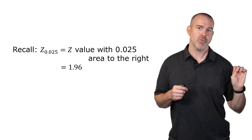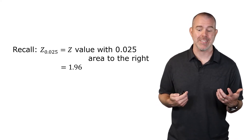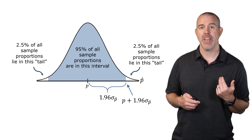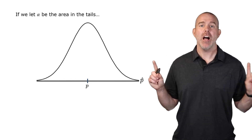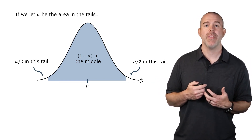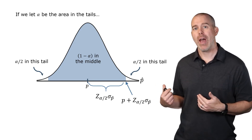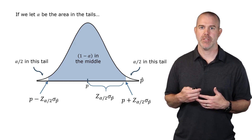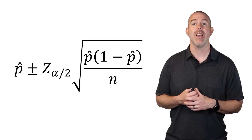The notation Z-sub-0.025 means the Z-value with 0.025 area to the right, which is 1.96. To generalize: let alpha be the area in the tails, so 1 minus alpha is in the middle, and alpha over 2 is in each tail. The distance is Z-sub-(alpha/2) standard deviations. This gives the generalized confidence interval: p-hat plus or minus Z-sub-(alpha/2) times the square root of p-hat times one minus p-hat all over n.